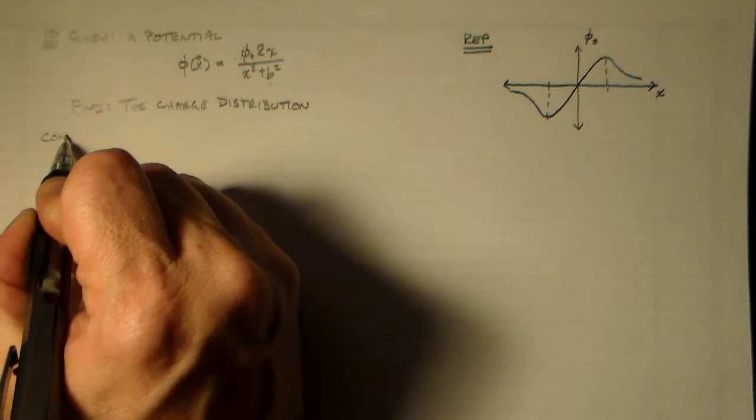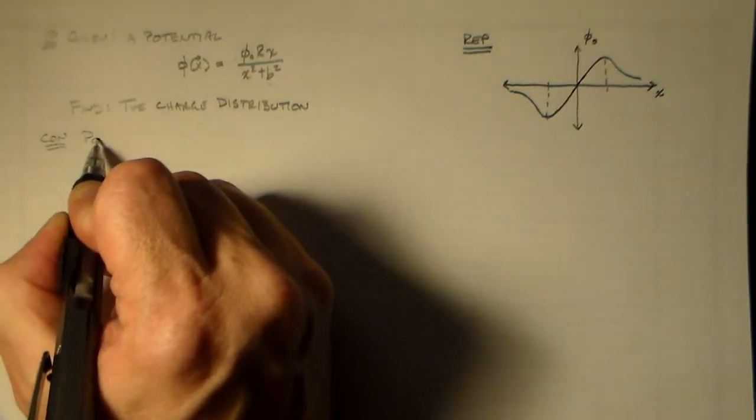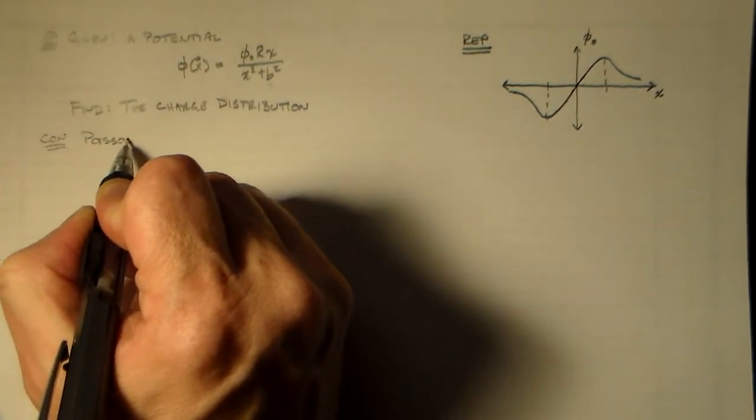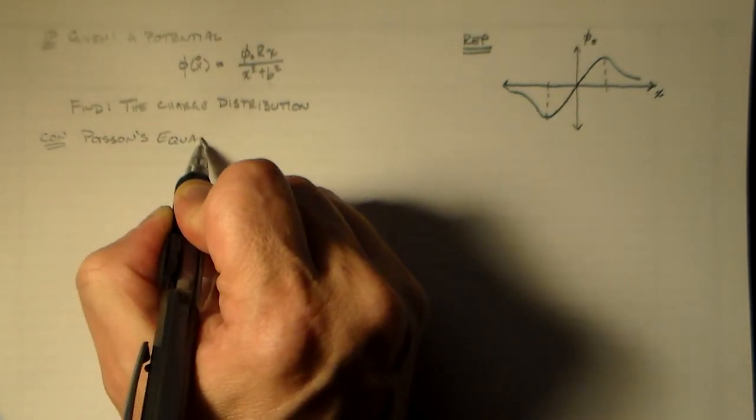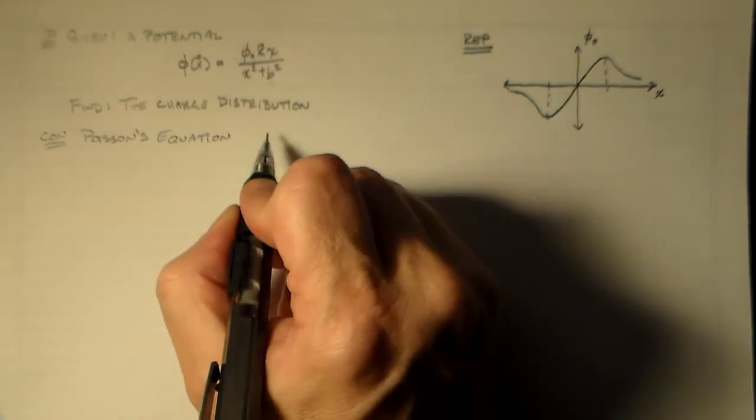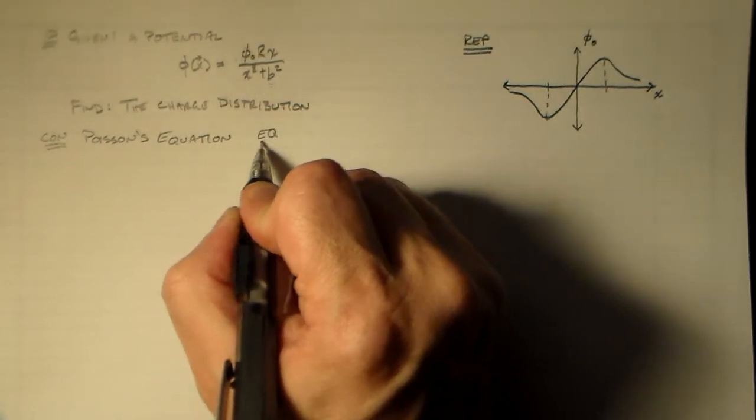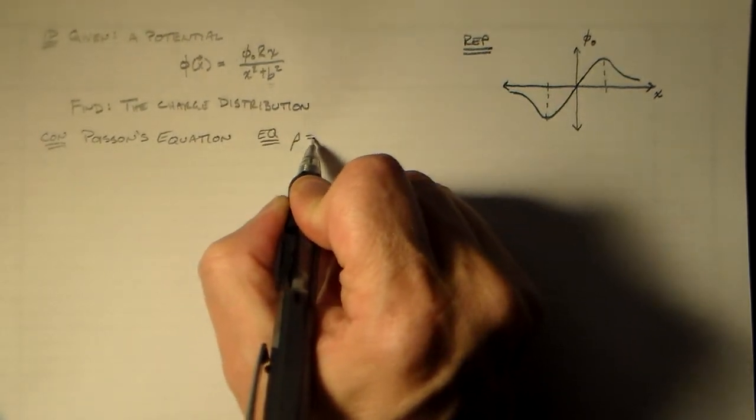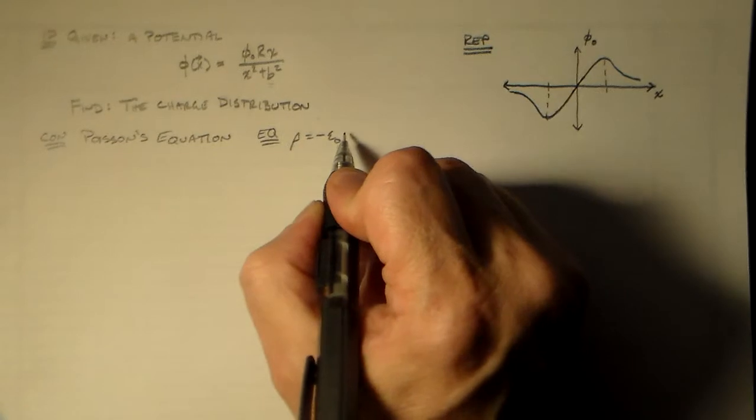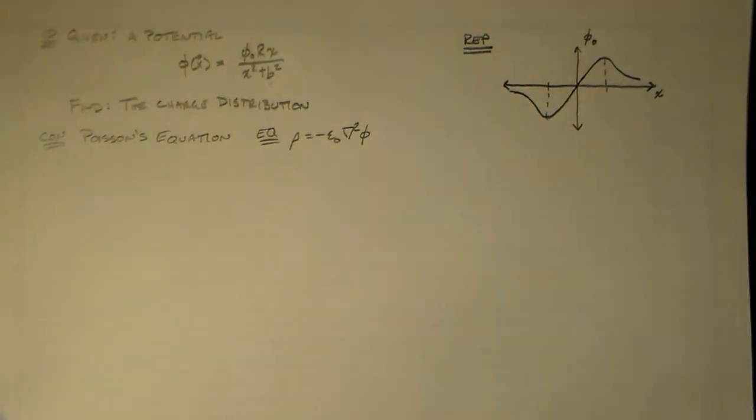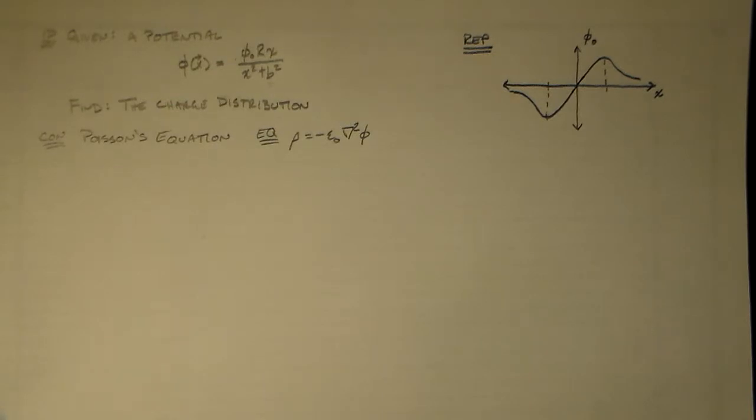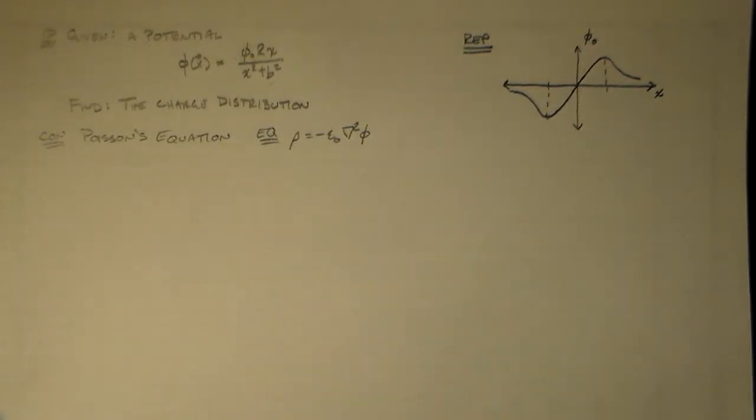So our concept here is the Poisson equation. And that's going to look like, for our purposes today, rho is equal to minus epsilon naught times the Laplacian of phi. So that's where we get our Laplacian. We're ready to go. We're going to have a good time.